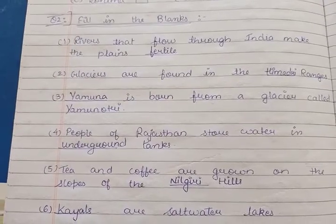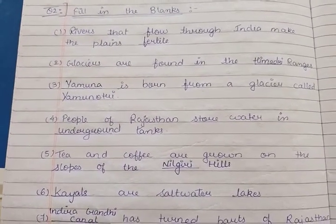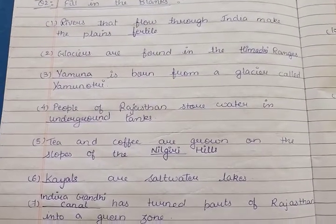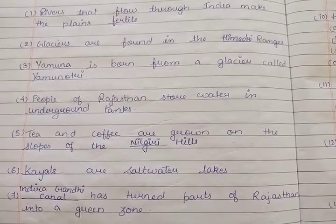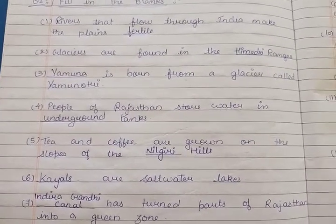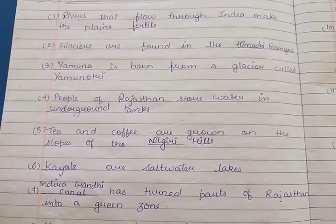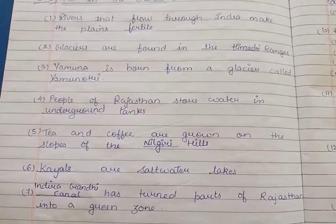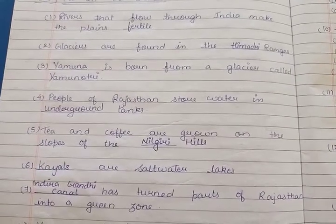Moving further, we have question number two, filling the blanks. First: Rivers that flow through India make the plains ___. Rivers make the fields fertile — suitable for agriculture. Second: Glaciers are found in the ___ ranges. Glaciers, the pieces of ice, are found in the Himadri ranges.